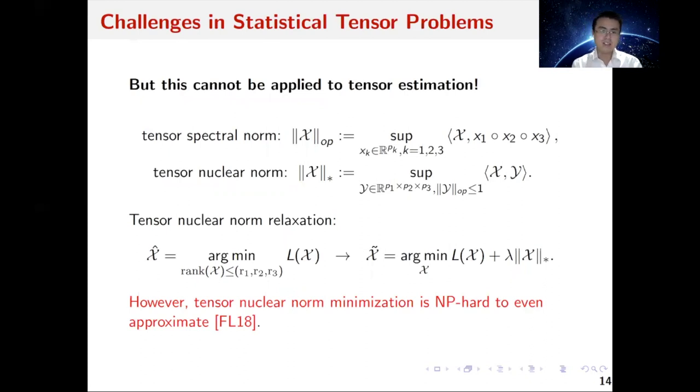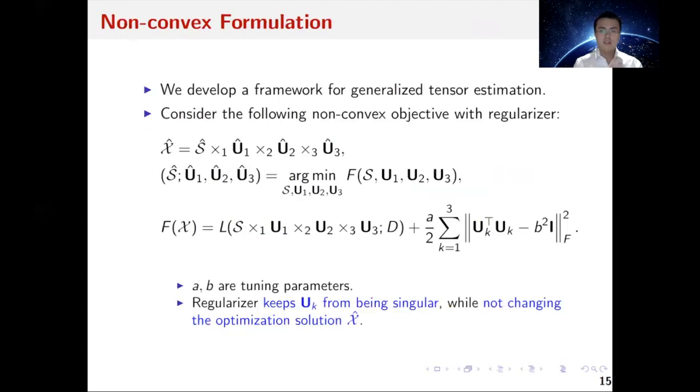Unfortunately, this idea does not really apply to tensor estimation. Although we can define tensor nuclear norm and tensor spectral norm similarly to matrices, the tensor nuclear norm relaxation is hard to even approximate, as indicated by previous work.